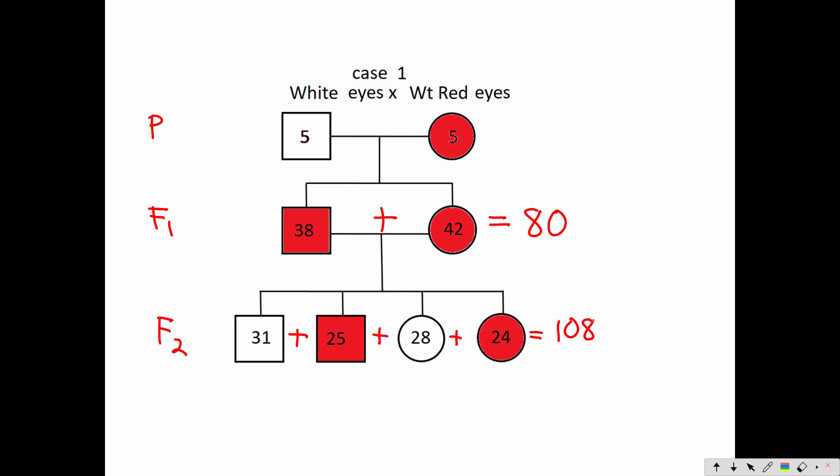And for the F2 generation, this gives me a total of 108 offspring. Now that's the number that I actually observed. What I want to do now is compare that to the number I would have expected. For the F1 generation, I'm expecting half to be male and half to be female. So I expect 40 males and 40 females, all of which should be red-eyed. So I'll write observed in red, and I'll write expected in blue underneath to compare to.